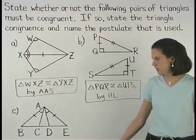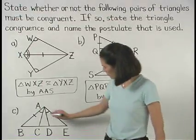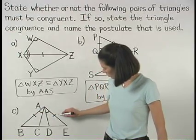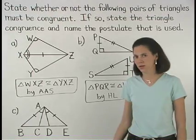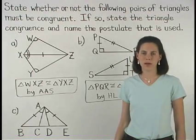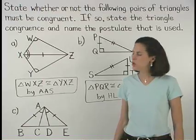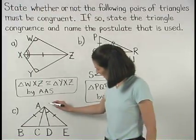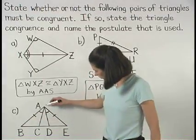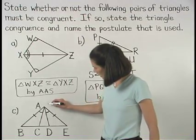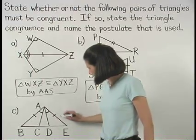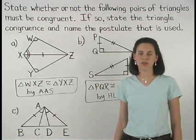In Part C, notice that we have a pair of sides that are marked as congruent and a pair of angles that are marked as congruent, so we need a third pair of congruent parts. Notice that since side AB is congruent to side AE, the large triangle ABE is an isosceles triangle.